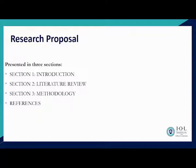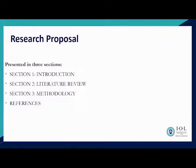In terms of the research proposal, we are going to look at its layout. It will be presented in three sections. Section 1 focuses on the introduction. Section 2 focuses on the literature review. Section 3 covers methodology. Remember, you need to have references, and everything — including the title page, all sections, all subsections, and the reference list — should be included within the 12 pages.